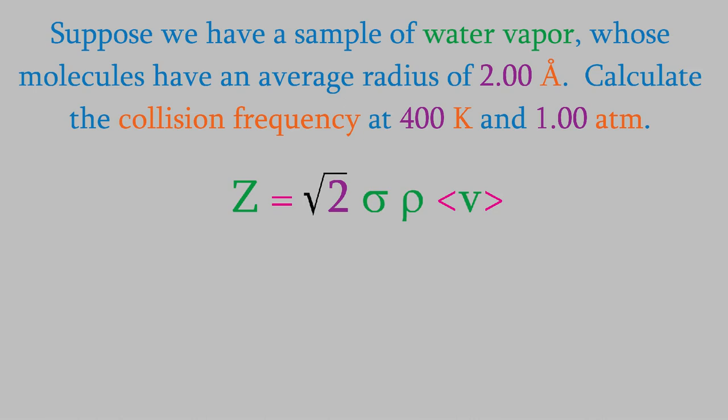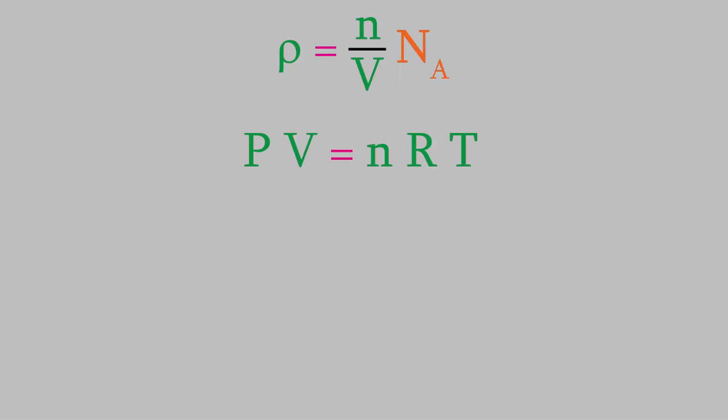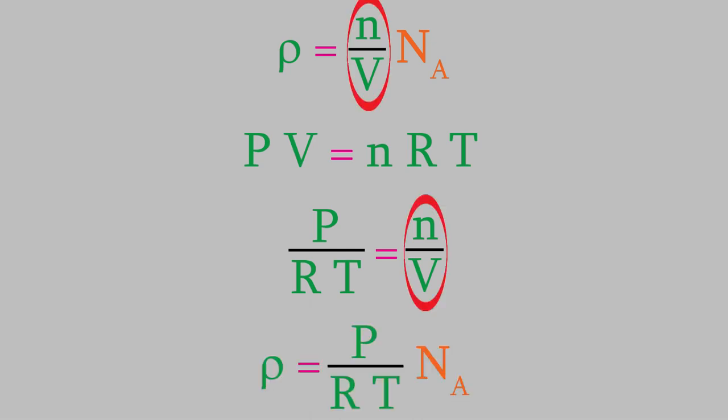Next, we'll calculate the number density. As I mentioned earlier, this is equal to the number of moles divided by the volume times Avogadro's number. At first, it looks like we don't have that information, but actually, we can use the ideal gas law to help us find the solution. We can rearrange the ideal gas law slightly by dividing both sides of the equation by v times r times t. If we do that, we find out that p over rt equals n over v. So, we can plug that into our equation for n over v.